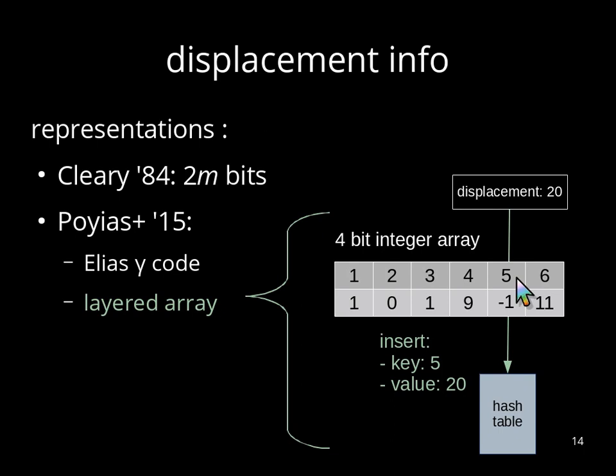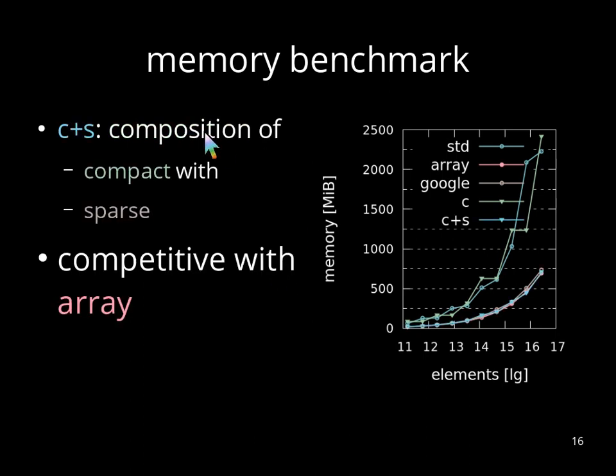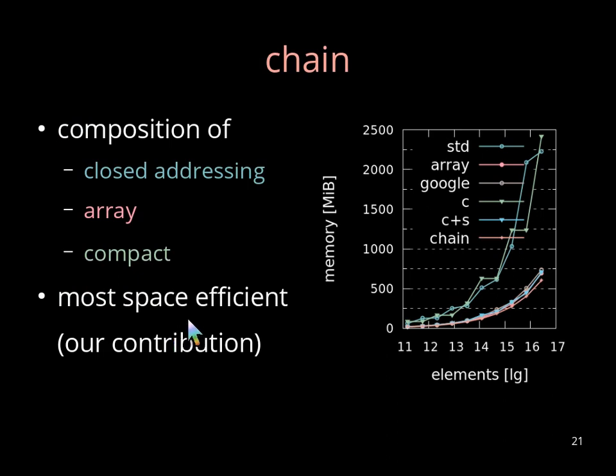Now, if we do the memory benchmark, we expect that these solutions perform much better with respect to the memory than the other solutions. Unfortunately, this is not the case. For instance, for the C, which is compact hashing with the layered and the maximal load factor of 0.5, behaves roughly like STD, so it's not memory efficient. To get it memory efficient, there is a solution for combining this compact solution with the sparse one, which is called here C plus S, and it's this cyan curve, and it's very competitive with array. But what we now like to propose is another one, which uses closed addressing, but also techniques like array and compact hashing. And you can see that this solution called chain, this orange curve, is the most efficient one.